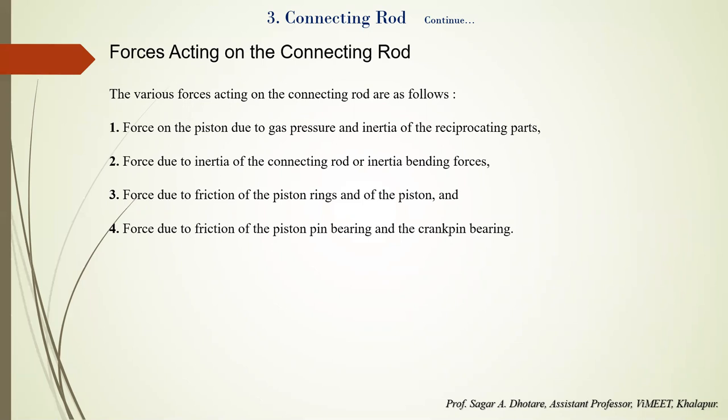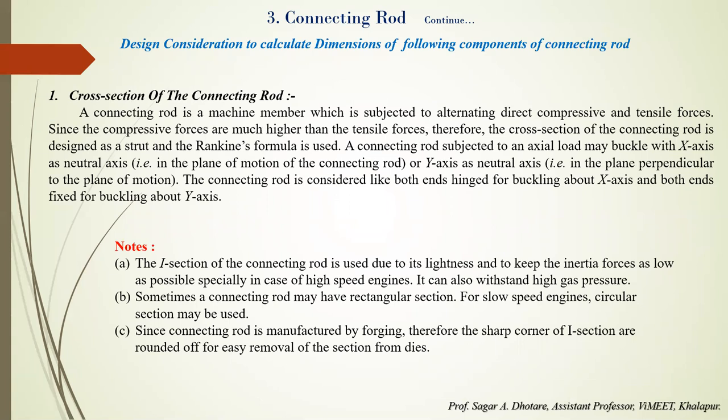In the pressure lubrication system, lubricating oil is fed under pressure to the big end bearing through holes drilled in the crankshaft, crank web, and crank pin. From the big end bearing, oil is fed to the small end bearing through drilled holes in the shank of the connecting rod. In such cases, the small end bearing is also lubricated by oil scraped from the wall of the cylinder liner using oil scraper rings.